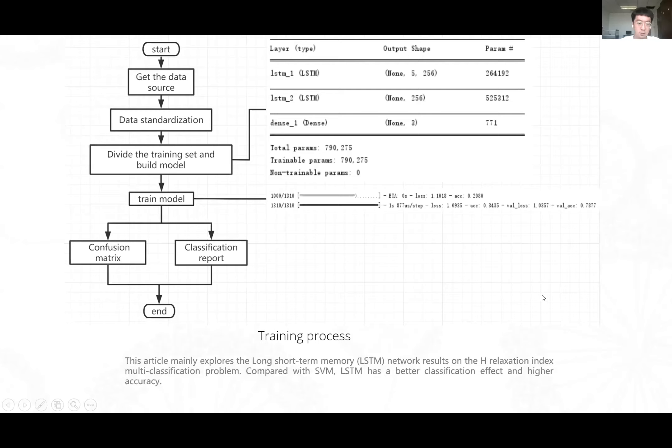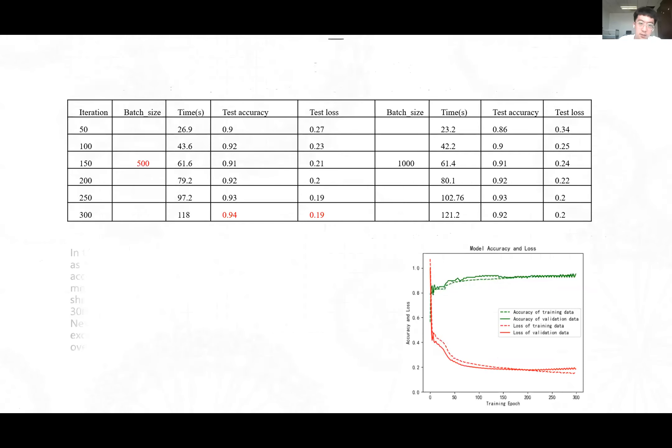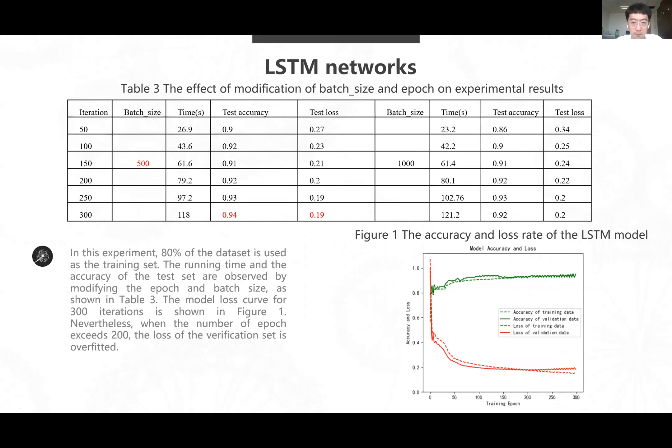The article mainly explores the long short-term memory network results on the H-relaxation index multi-classification problem. Compared with SVM, LSTM has a better classification effect and higher accuracy. This is our LSTM network. In table three, the effect of modification of batch size and epoch on experimental results. In this experiment, 80% of the dataset is used as the training set. The running time and accuracy of the test set are observed by modifying the iteration and batch size. In figure one, we can see when the epoch number exceeds 200, the loss of the verification set is overfitted.